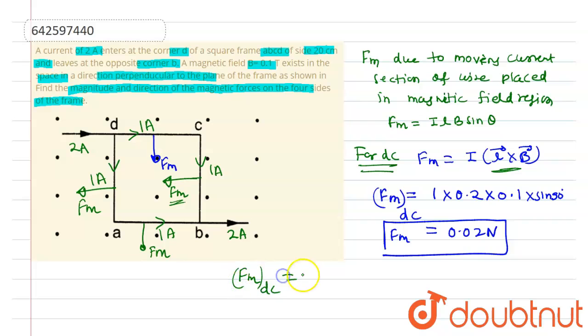Whether it is DC, CB, AB, or DA, the magnetic force will be 0.02 Newton because the amount of current, the length, and the magnetic field is the same everywhere. So the magnetic force will be the same.